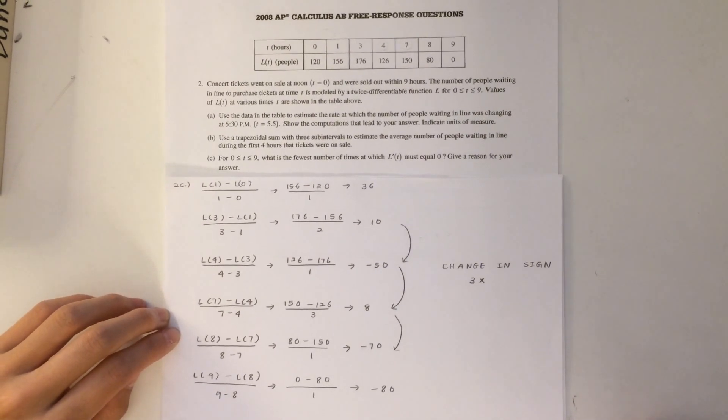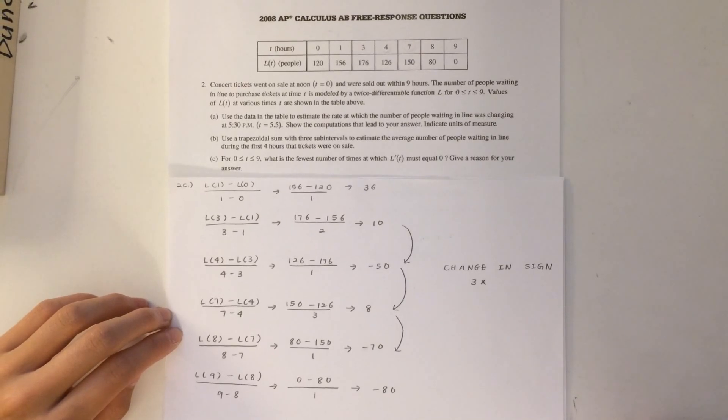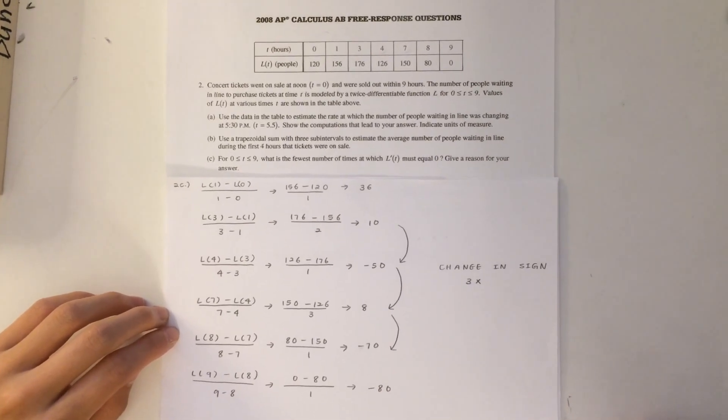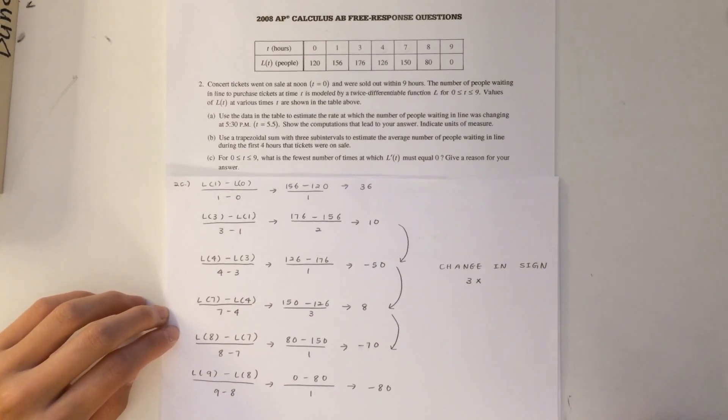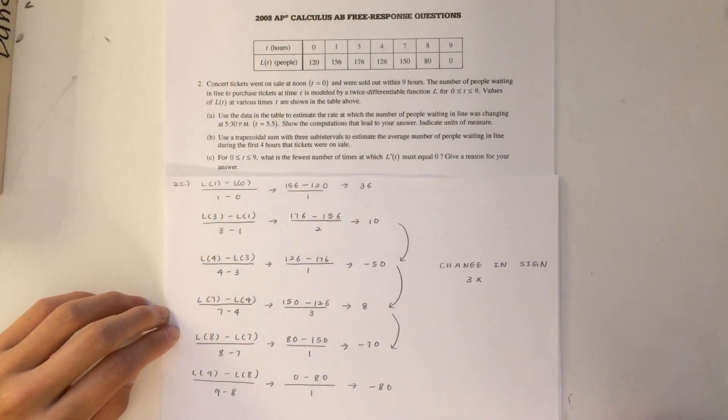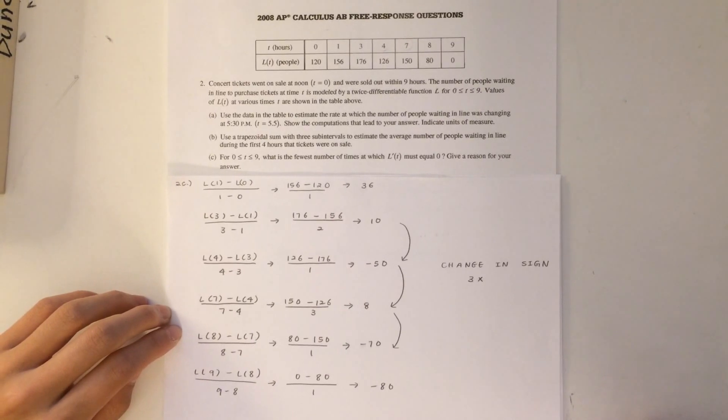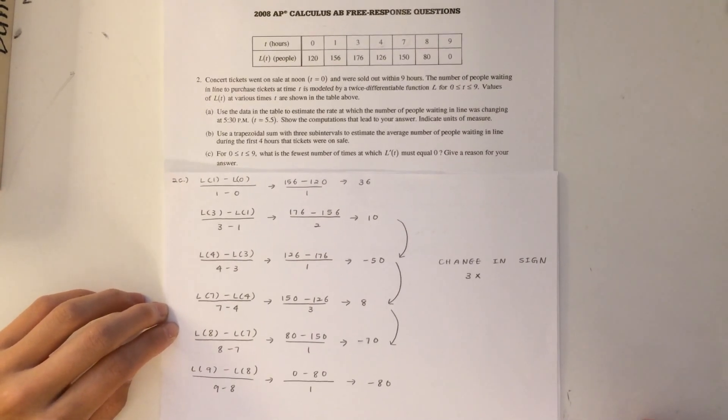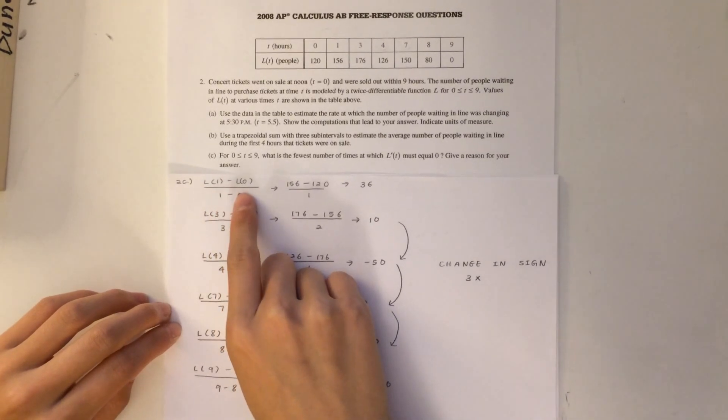So since we are not given the function of l prime of t, we will find it by calculating the slope between each interval. For example, for the interval between t equals 0 and 1, we find the slope by calculating change in y over change in x. L of 1 minus l of 0 over 1 minus 0 gives us 36.